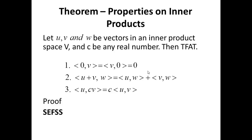Theorem — Properties of an Inner Product: Let U, V, and Omega be vectors in an inner product space V, and let C be a scalar. The following are true: (1) ⟨0, V⟩ = ⟨V, 0⟩ = 0; (2) ⟨U + V, Ω⟩ = ⟨U, Ω⟩ + ⟨V, Ω⟩; and (3) ⟨U, cV⟩ = c·⟨U, V⟩. Proof is a simple exercise for serious students.